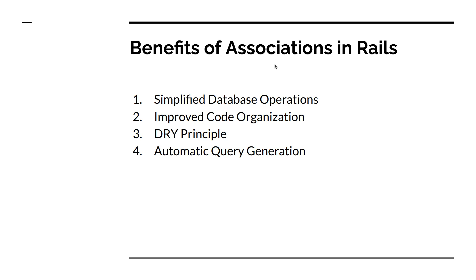The second benefit is improved code organization. Associations help you organize your codebase by providing a clear structure for modeling relationships between different entities. This makes it easier to understand and maintain the codebase.